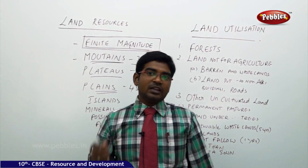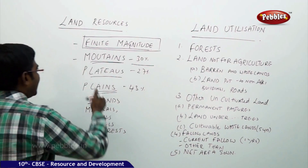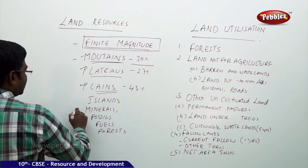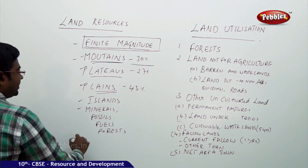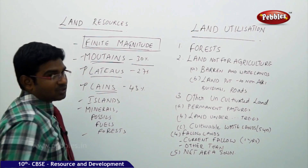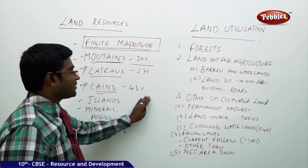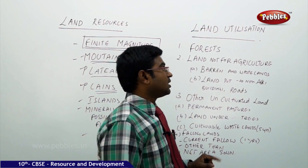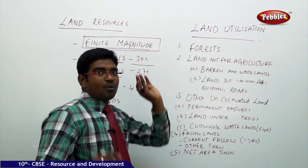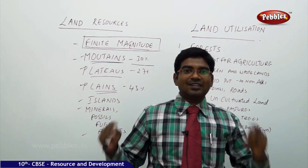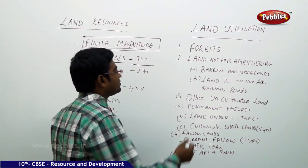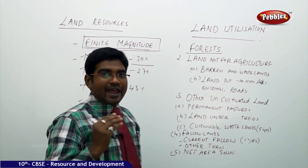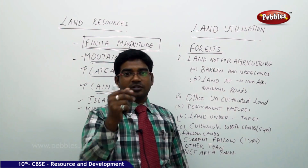So there is a possibility of reducing the percentage of land but no chance of any increase in land area. That makes it very difficult. Understanding this, land has again been categorized into mountains, plateaus, plains, mineral regions, islands, forests, and fossil fuels. Now moving on to understand how land is utilized on a larger scale — the first category is forest. On land only we have forests.